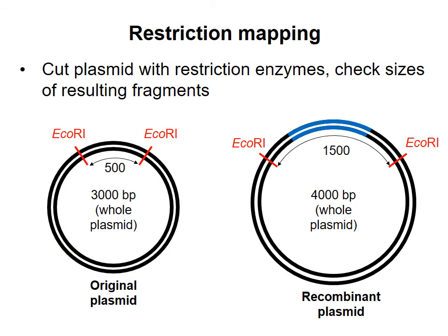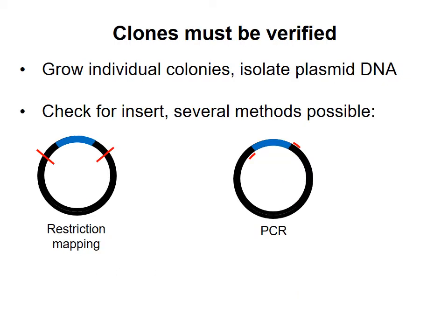For example, suppose you have two EcoRI sites on the starting plasmid that are 500 bases apart. Then between these sites, you add an insert that is 1000 base pairs long. If you cut the recombinant plasmid with EcoRI, you would expect to see a fragment of 1500 base pairs instead of 500. Another way to see if DNA has been inserted is to do PCR, using primers that flank the predicted insert. If you see a PCR product of an appropriate size, that is evidence that your plasmid contains your insert.